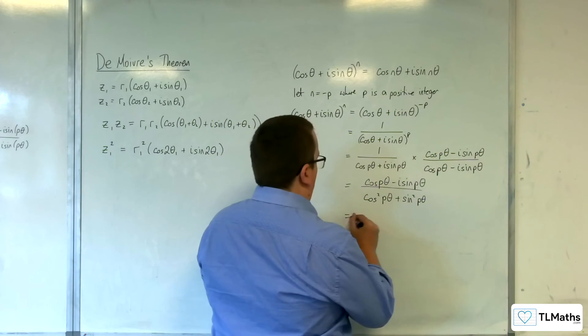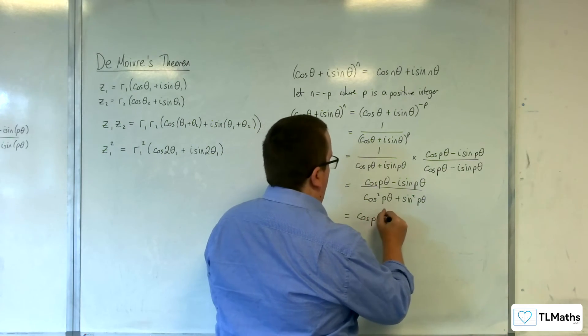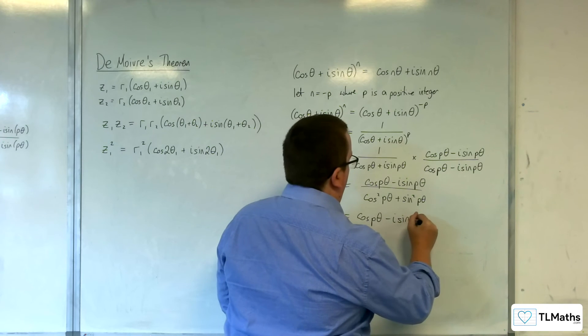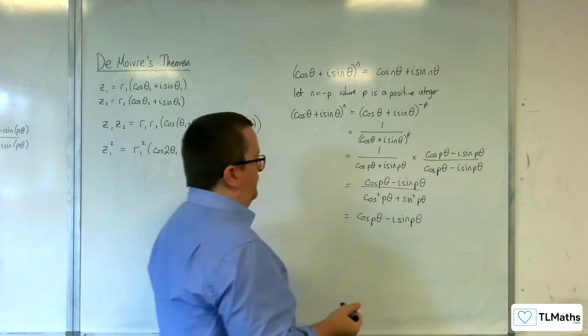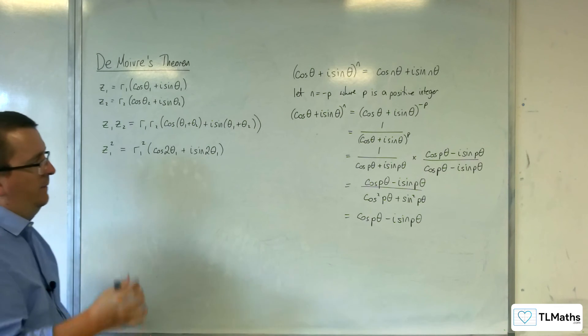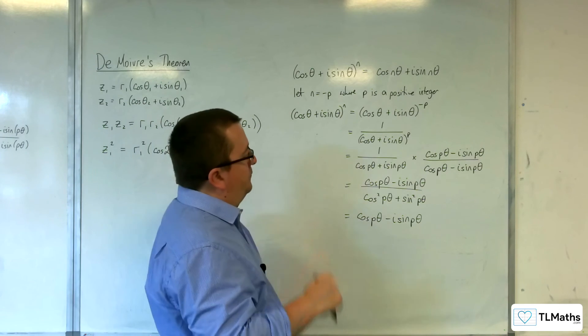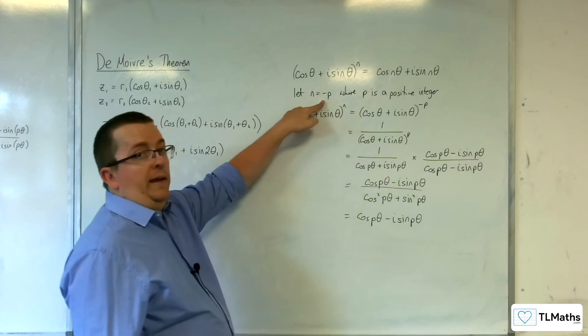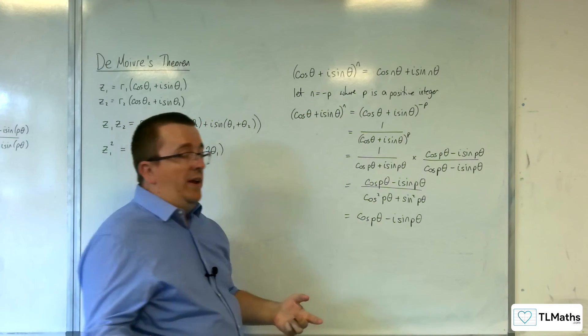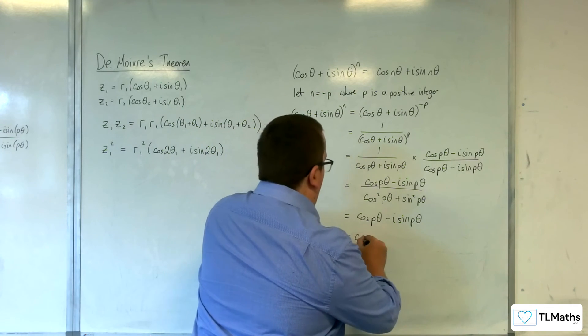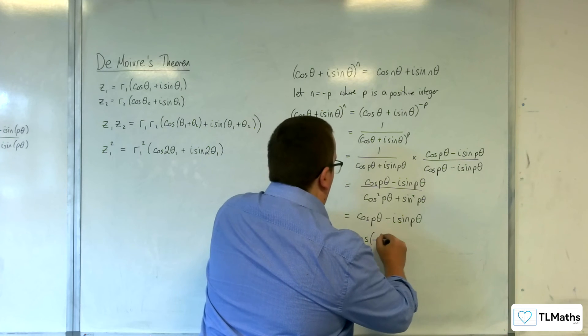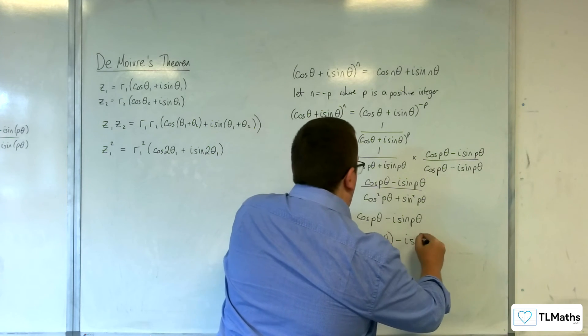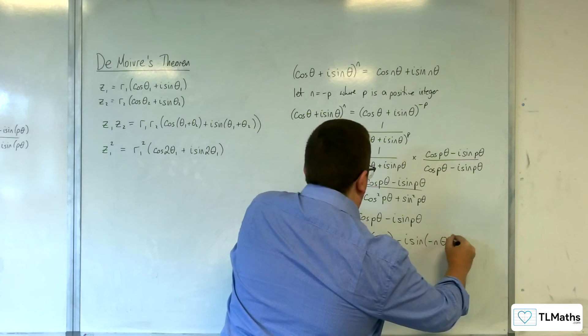So this is cosine of P theta take away i sine of P theta. Now, remember, N was equal to minus P. So P is equal to minus N. So if I swap back in, I've now got minus N theta, take away i sine of minus N theta.